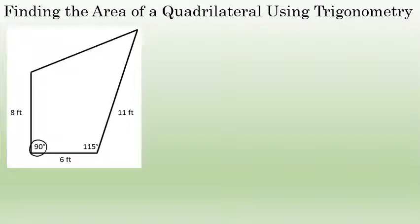The strategy I'm instead going to take is to break this quadrilateral apart into two triangles. I'll call these two triangles triangle 1 and triangle 2. If I can find the area of each triangle, then the sum of those two areas will be the area of the entire quadrilateral.